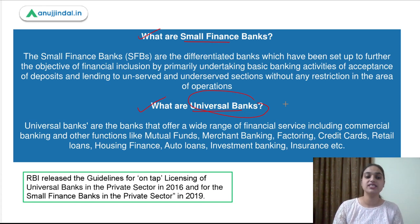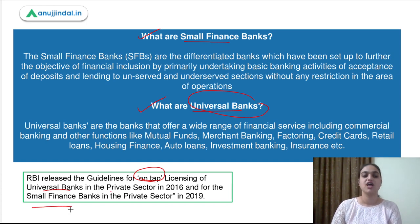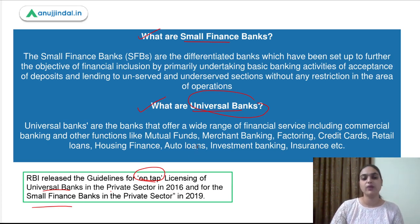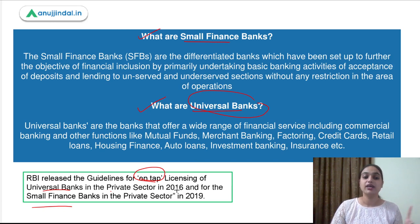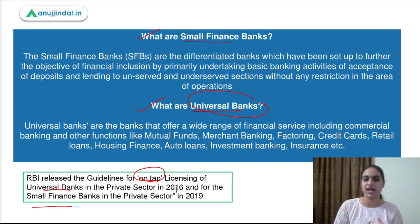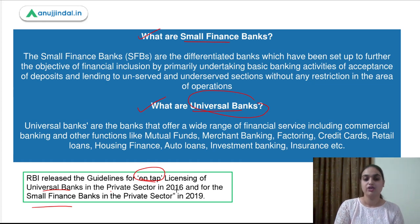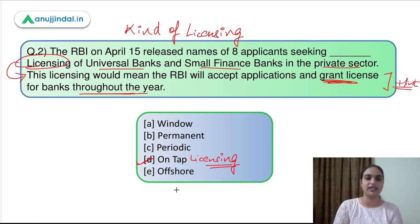RBI has released the guidelines for on-tap licensing for both universal banks and small finance banks. What used to happen, as I have already mentioned, the facility was open for certain time frames only. In 2016, the on-tap licensing facility came up for universal banks, and then in 2019 it was open for small finance banks. So this was the basic idea behind on-tap licensing, and the answer to this question is option D.